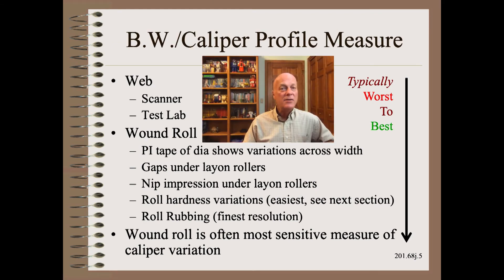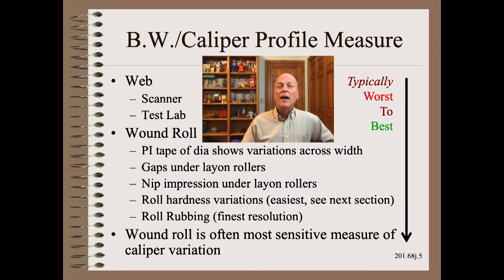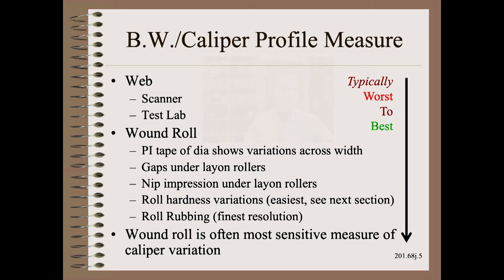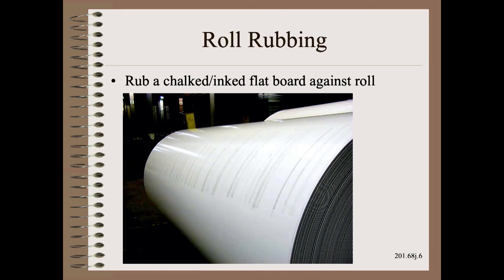There are many ways to measure or infer profile variation. Here, I list them in very approximate order from least to most sensitive. Of course, your application may differ, so use statistics to evaluate the sensitivity of each measurement in your own application. I teach how to do this in my award-winning and trademarked Web 101 course. For applications where the gauge bands are narrow and the product is thin and has a high roll modulus, roll rubbing may give the most sensitive results.